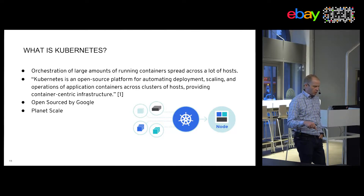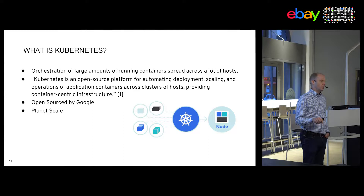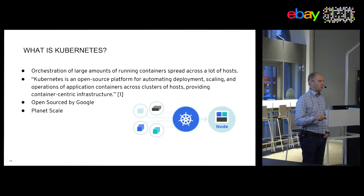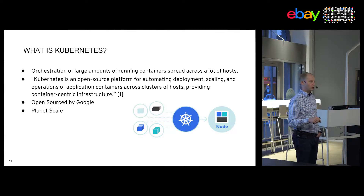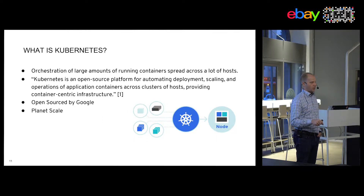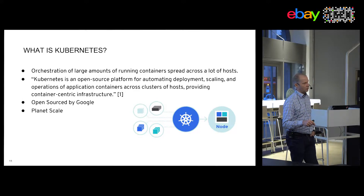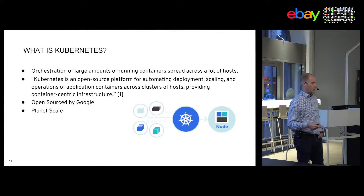Kubernetes fell into the same time frame that Docker came around. We at Red Hat decided to put our platform-as-a-service technology — which was OpenShift version 2 — onto a new technological footing. This means we used Kubernetes from the start, built that in along with Docker, to renew what we already had.